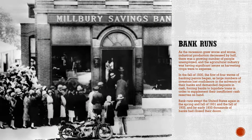As the recession grew worse, industrial production decreased by half. There were a growing number of unemployed people, and the agricultural industry had significant issues as harvesting crops was too expensive. In the fall of 1930, the first of four waves of banking panics began, as large numbers of investors lost confidence in the solvency of their banks and demanded deposits in cash, forcing banks to liquidate loans. Bank runs swept the United States again in the spring and fall of 1931, and fall of 1932, and by early 1933, thousands of banks had closed their doors.